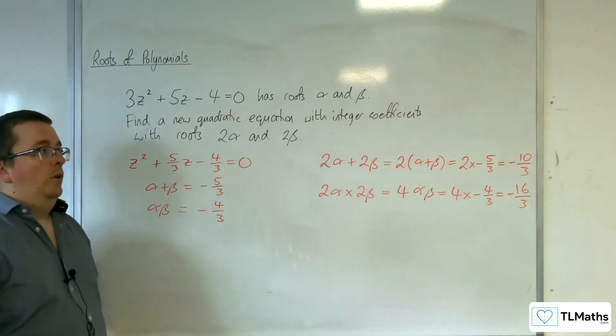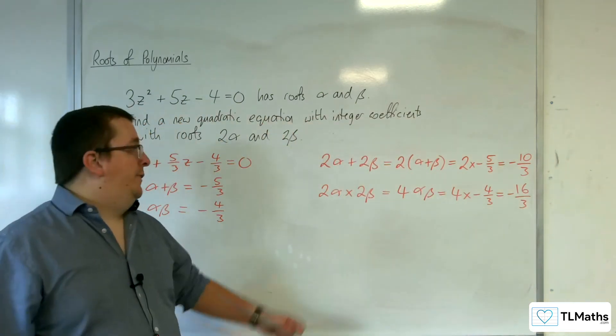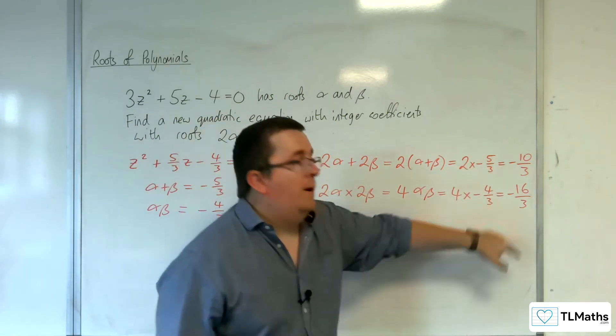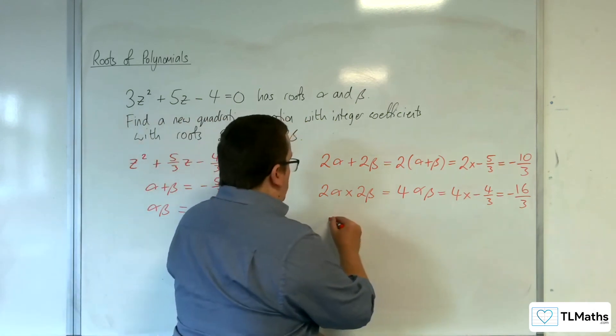So I know that this quadratic equation I need to find has the sum of its roots as -10/3, and the product of its roots as -16/3. So I can write that down directly. So z² + 10/3z - 16/3 = 0.